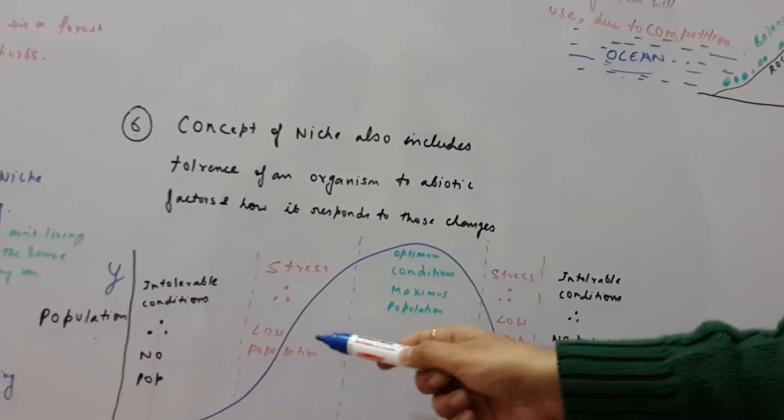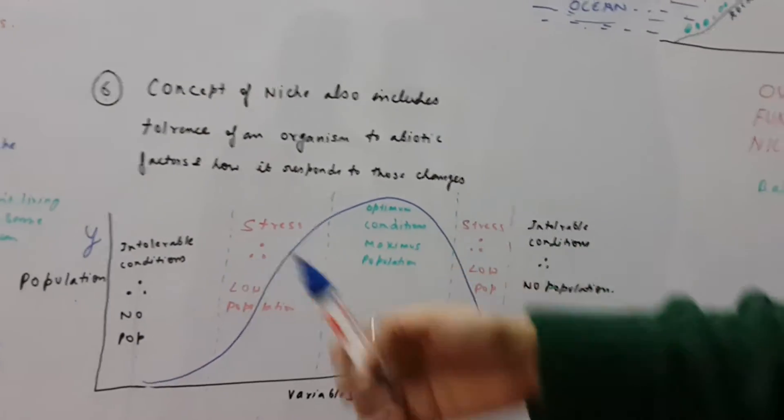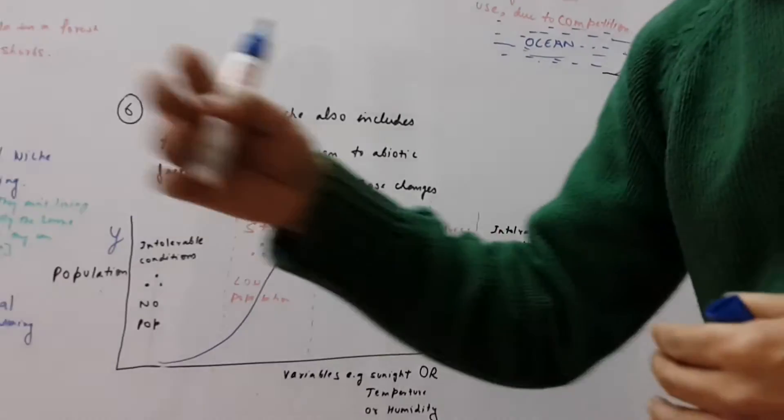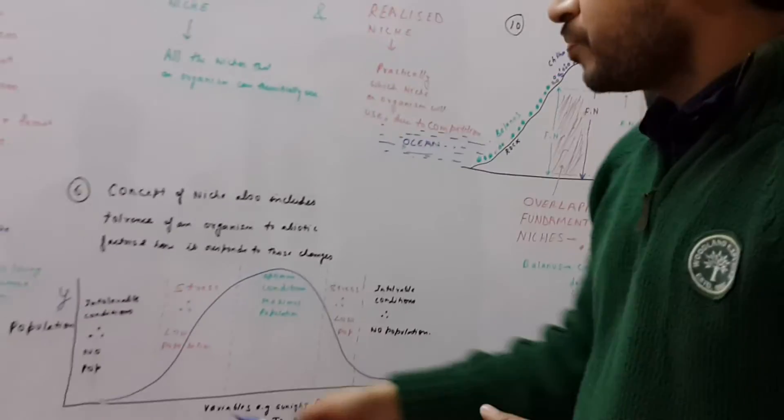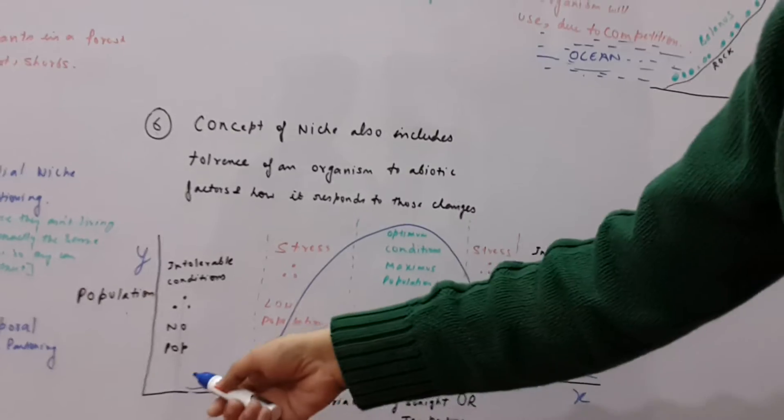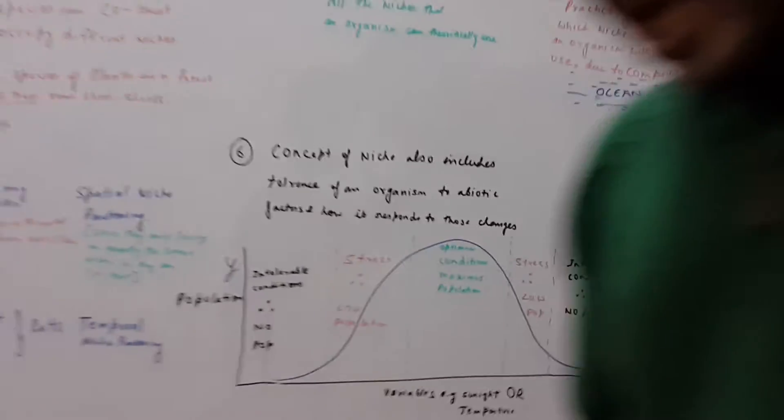But as you move away to either of the sites, the conditions would become difficult. For example, the temperature is becoming high, so the species would not be able to survive. And when the conditions become intolerable, you will not find any species.